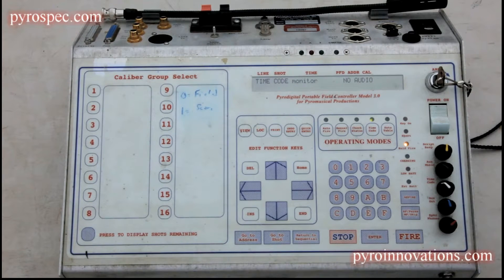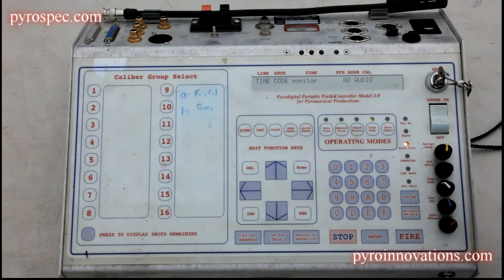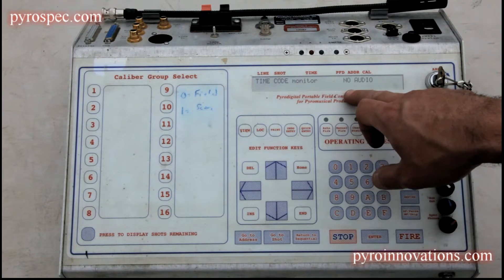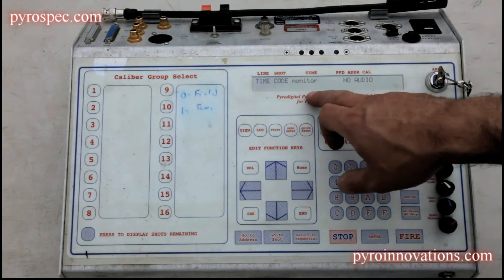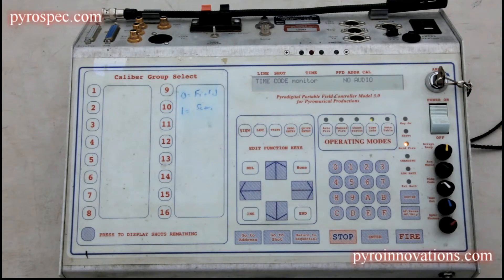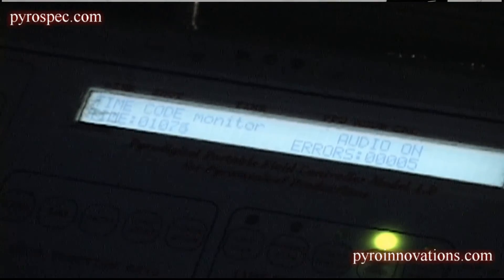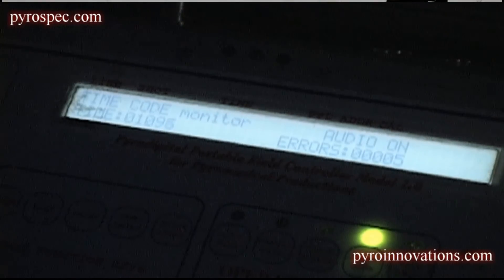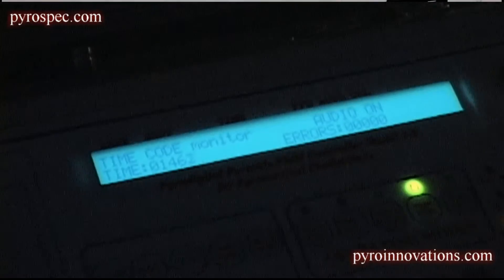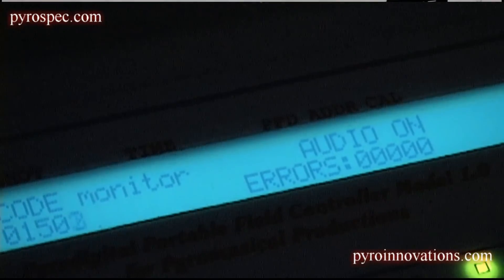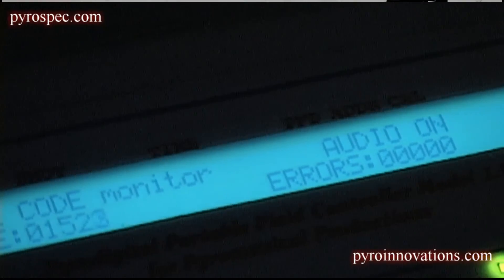Once the timecode does come through and it starts to see valid frames, it's going to have an error count at the bottom of the LCD screen here that will basically give you an indication of how good your timecode is. If you have a hard line, a good quality short run, you should essentially have no errors there. Over a wireless link sometimes you'll see periodic errors, which is fine.